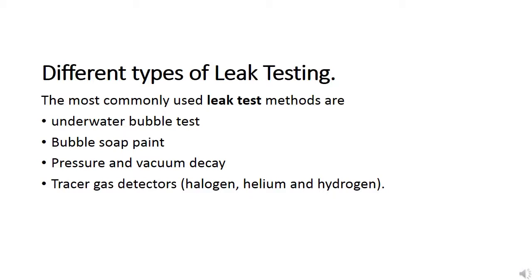Different types of leak testing: the most commonly used leak test methods are underwater bubble test, bubble soap paint, pressure and vacuum decay, tracer gas detectors — halogen, helium, and hydrogen.